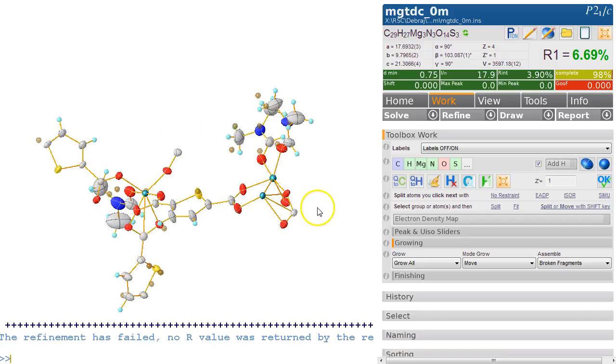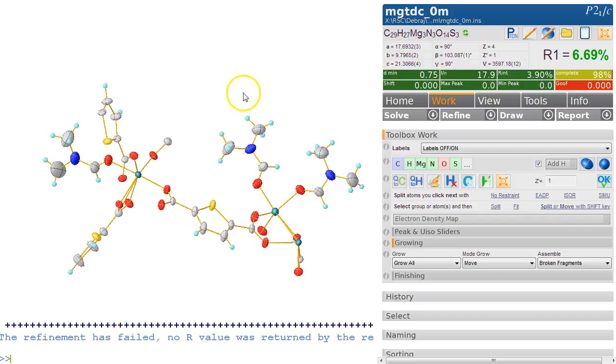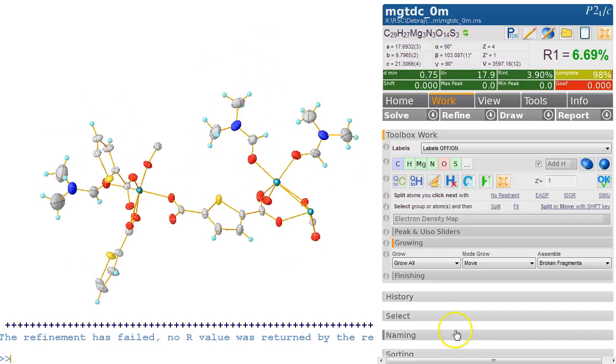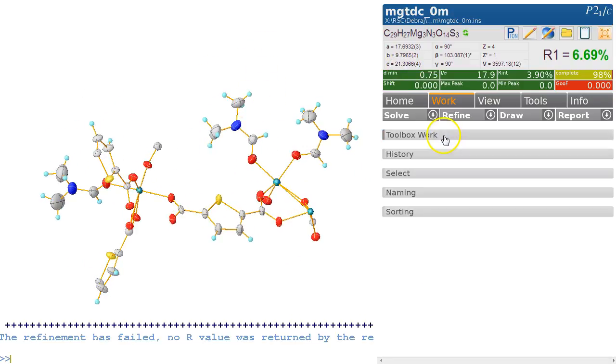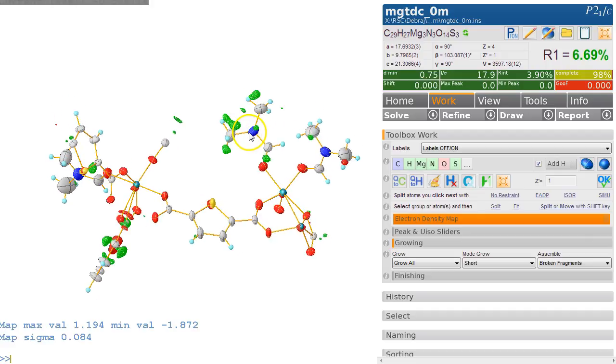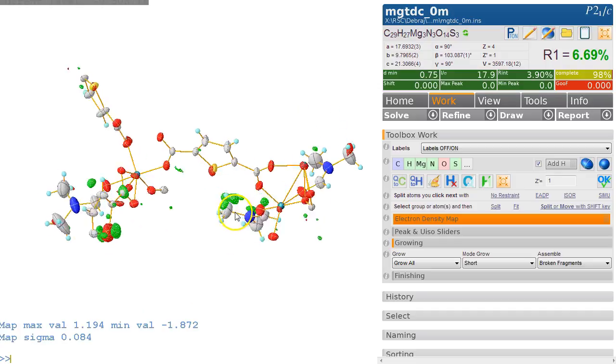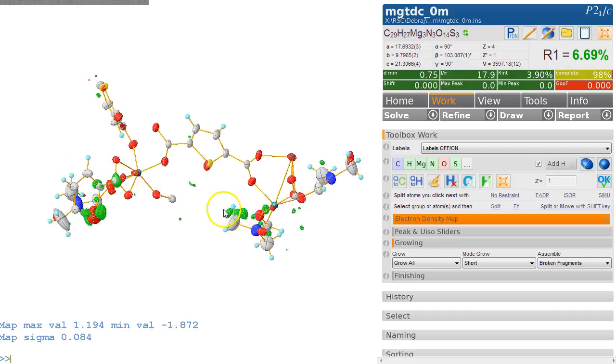In principle, this is sort of a settled structure. We've got magnesium. Let's just check whether they really are magnesiums by clicking on the toolbox work and the density map. That looks fine, so there's nothing going on here that's highly suspicious. This is probably disordered over two positions, but we ignore this at the moment.